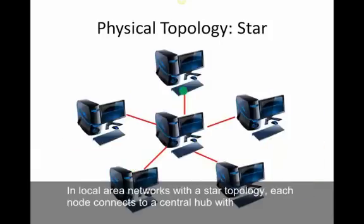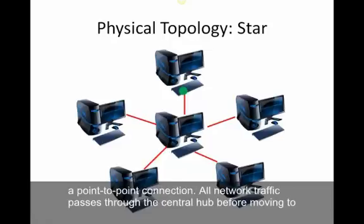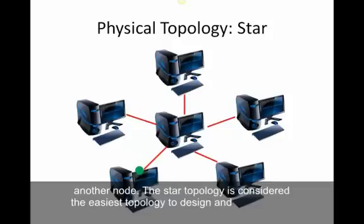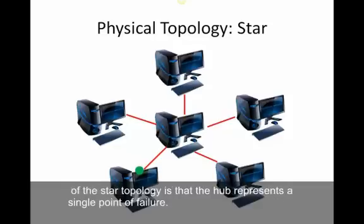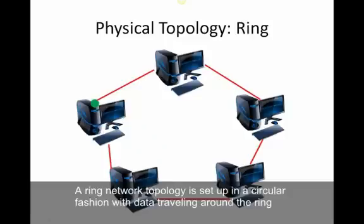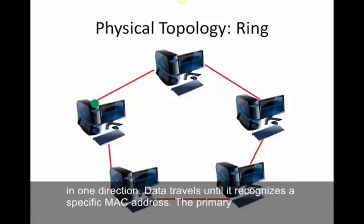In a local area network with a star topology, each node connects to a central hub with a point-to-point connection, and all network traffic passes through the central hub before moving to another node. The star topology is considered the easiest to design and implement because of the simplicity of adding additional nodes. The primary disadvantage is that the hub represents a single point of failure — if it doesn't work, nothing works. A ring topology is set up in a circular fashion with data traveling around the ring in one direction until it recognizes the MAC address of the intended computer.